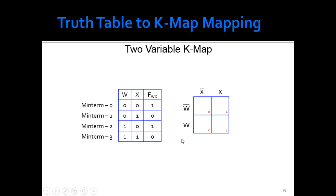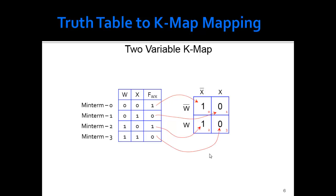This is what a two-variable K-map might look like. We start with not W and not X in one corner; I change by one variable and go to X; here I go from not W to W. Now I take the truth table outputs and fill them in: the output for not W not X goes here, I put a one there. The next place is not W and X, so I put it in. Then W not X, and then W X. Now I've put my zeros and ones into the K-map.